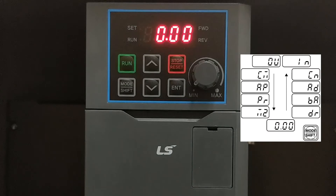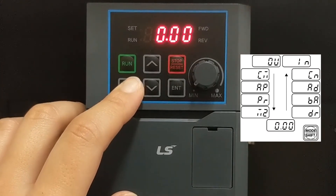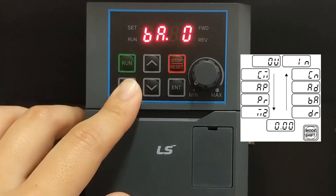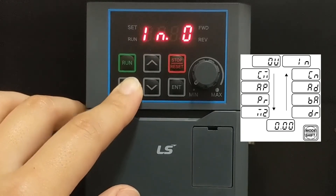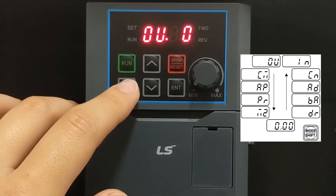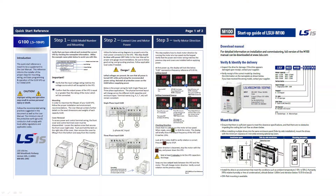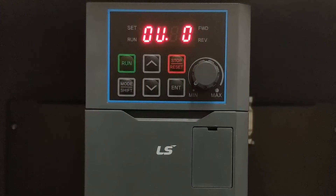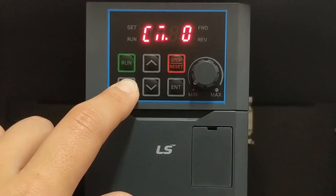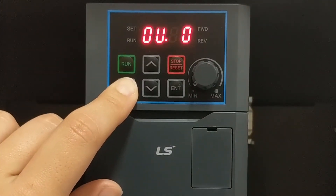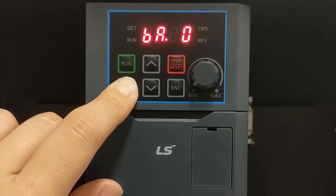The Mode Shift key is also used to display the various parameter groups. In addition to the Operation group, there is also Drive, Basic, Advanced, and other groups. For a list of specific groups and parameters, refer to the G100 or M100 manual or Quick Start reference. You can also press and hold the Mode Shift key for a second to go to the previous group, and pressing and holding longer will allow you to cycle through the groups in the opposite direction.